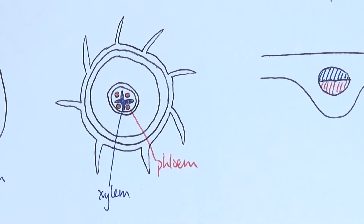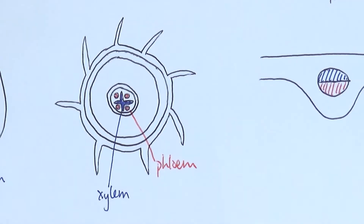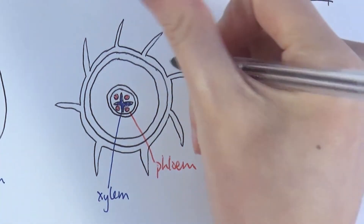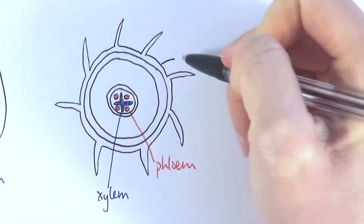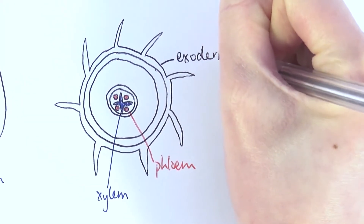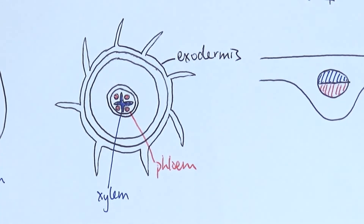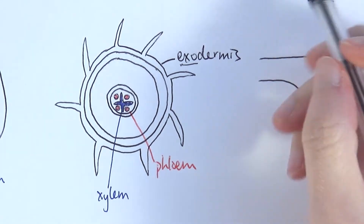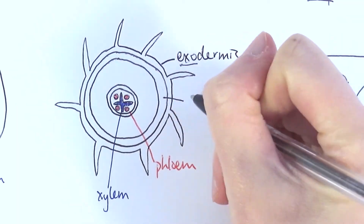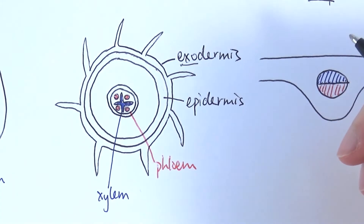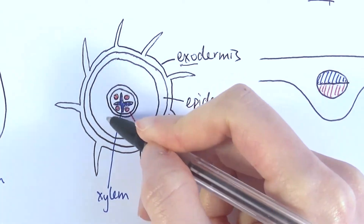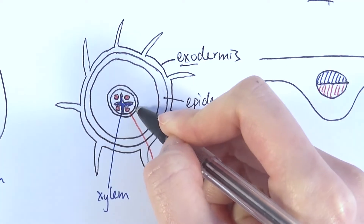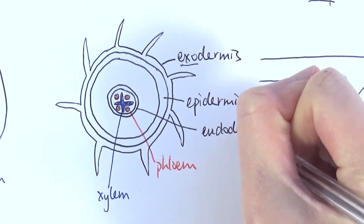I need to talk about three different layers that we can find in roots, because people quite often mix up these three different layers. The outside layer, the layer with the root hair, is called the exodermis — remember exo means the outside. Then we've got the middle layer, which is called the epidermis — epi is like in the middle. Then we've got the smaller layer that surrounds the vascular bundle, and that is called the endodermis — endo means inside.